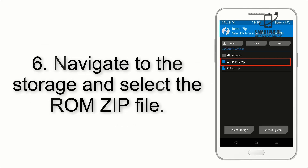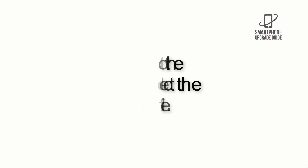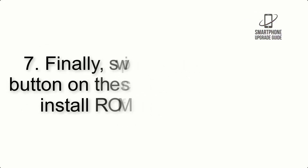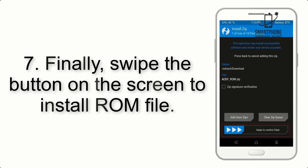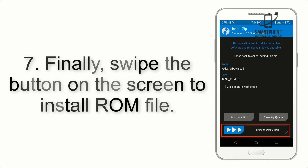Step 6: Navigate to the Storage and select the ROM ZIP file. Step 7: Finally, swipe the button on the screen to install the ROM file.